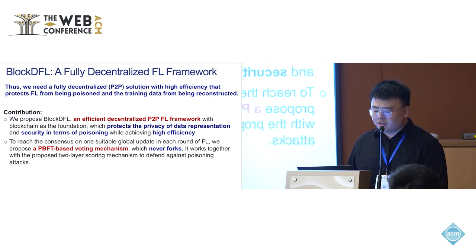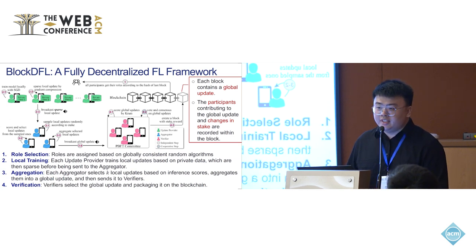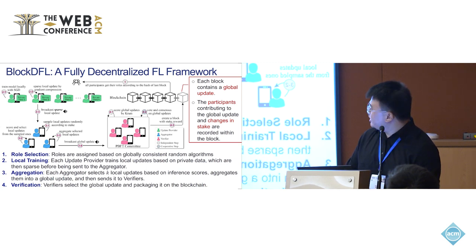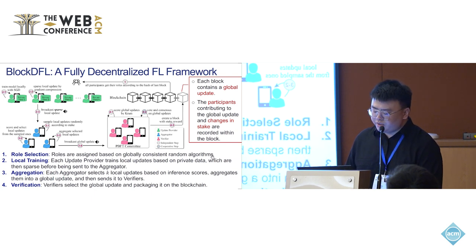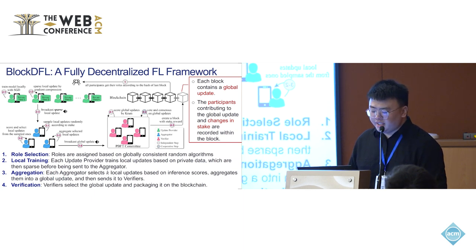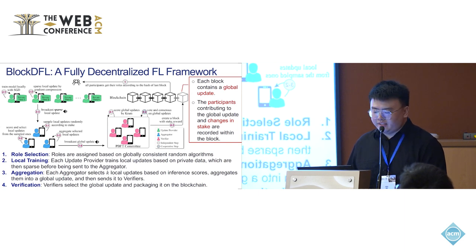The voting mechanism works together with the proposed two-layer scoring mechanism to defend against poisoning attacks. There are four processes in each round of BlockDFL. The first one is role selection. There are three roles: update providers shown in green, aggregators in blue, and verifiers in red, assigned based on a globally consistent random algorithm. The second is local training, where each update provider trains local updates based on its private data. The third is aggregation, where each aggregator selects key local updates based on inference scores, aggregates them into a global update, and sends it to verifiers. The final one is verification, where verifiers select the global update and package it on the blockchain.